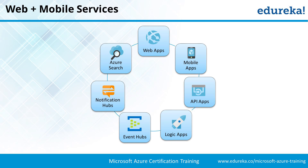Then you have web and mobile services. What you see on the screen is part of PaaS. We talk about something called app services, where we can build different applications and mobile apps — these are web apps configured and compatible with mobile devices. Then you have API apps, logic apps, event hub, notification hub, and Azure search. These are the services for mobile and web, all part of PaaS.